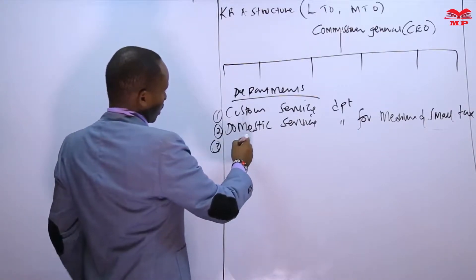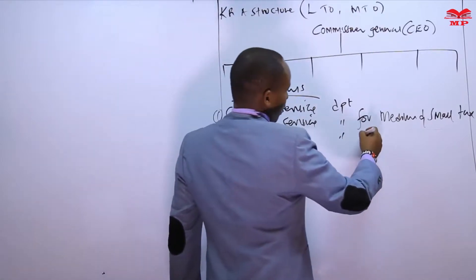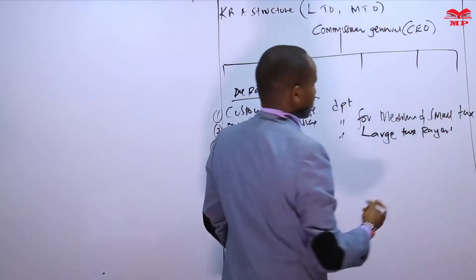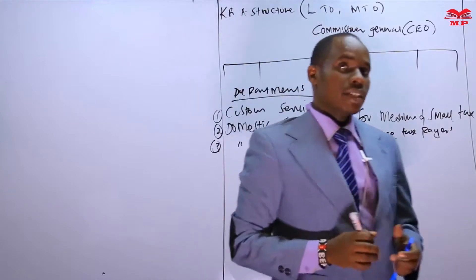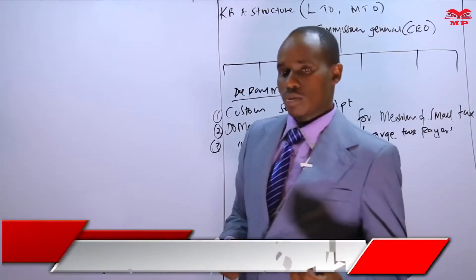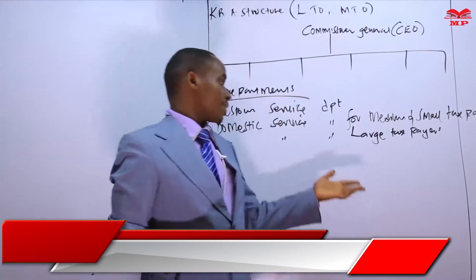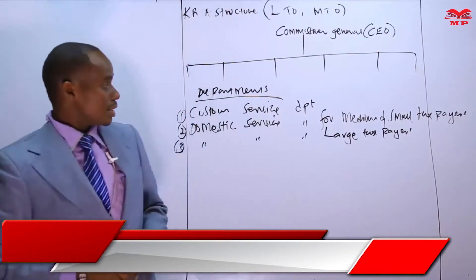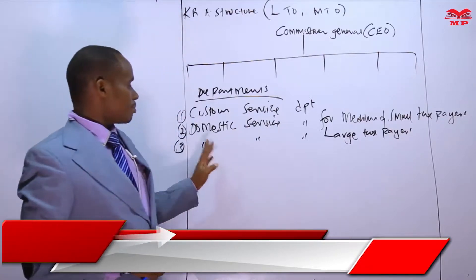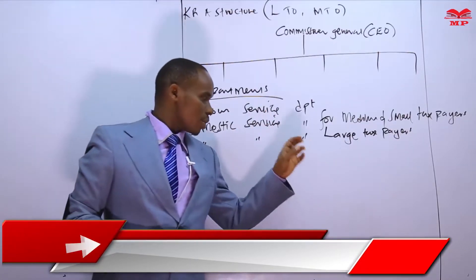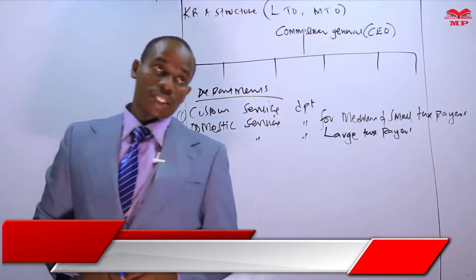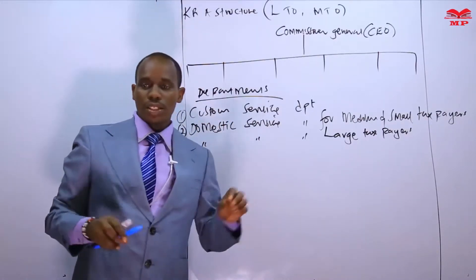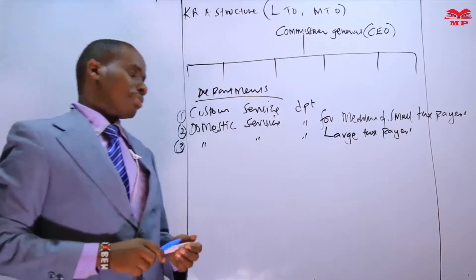Department number three is the Domestic Service Department for large taxpayers. We need to give special attention to large taxpayers because they contribute a significant amount of tax to our government. Therefore, we have created a department that is meant to handle the issues of large taxpayers.